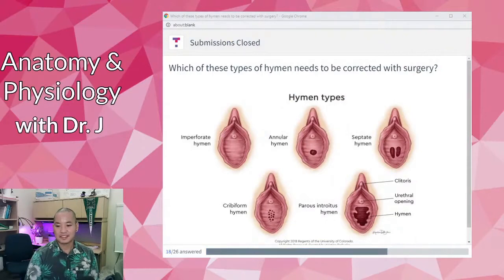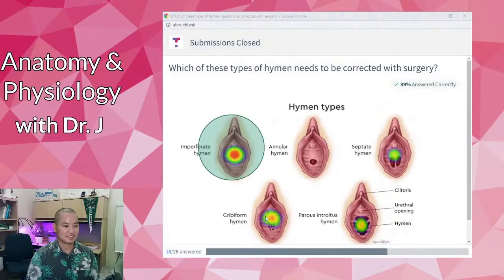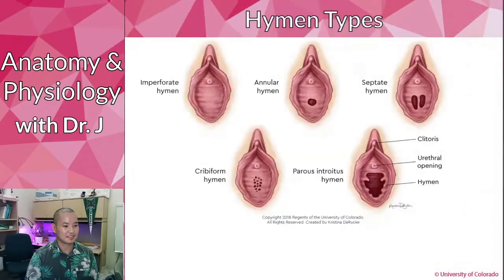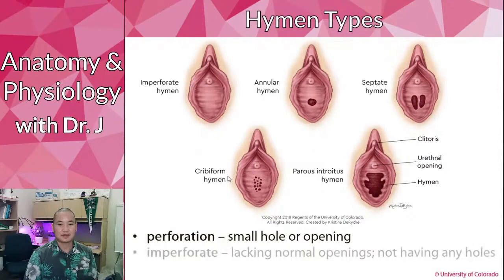Let's see what people answered. Some clicked one option, some clicked cribriform, some clicked the septate hymen. The correct answer is the imperforate hymen. This hymen is completely intact — there is no opening. A perforation refers to a small hole or opening, so imperforate means there is no opening at all.